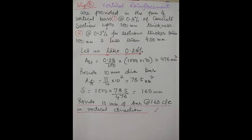Step 5: Vertical reinforcement. Vertical bars are provided at 0.3% for sections up to 100 mm thick, and 0.2% for sections between 100 mm and 450 mm thick. Here, taking 0.28%: AST = 0.28/100 × 1000 × 170 = 476 mm². Using 10 mm diameter bars (area = 78.5 mm²), spacing = 165 mm. Provide 10 mm diameter bars at 160 mm center-to-center in the vertical direction.